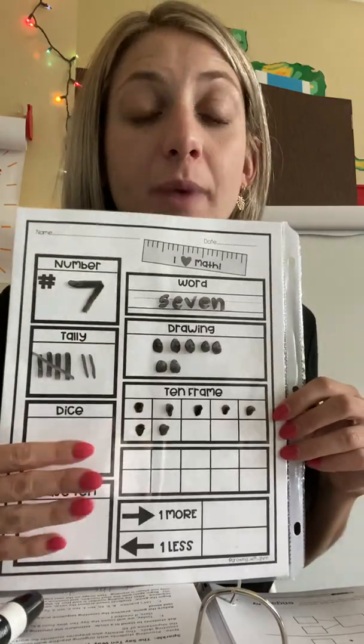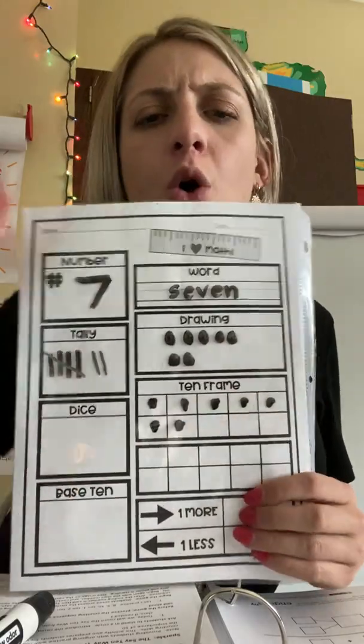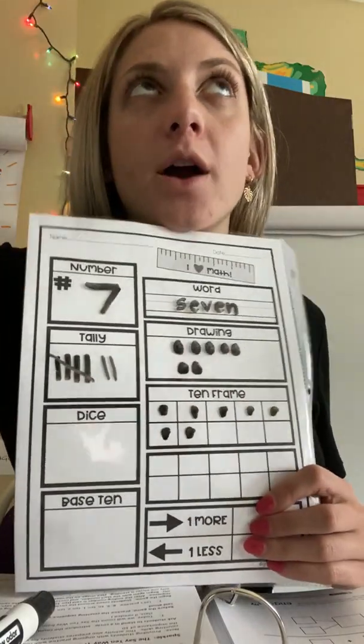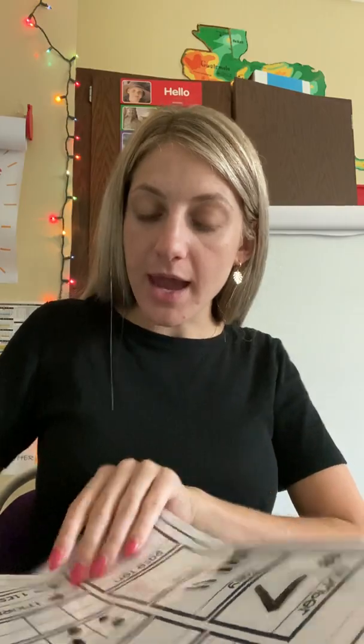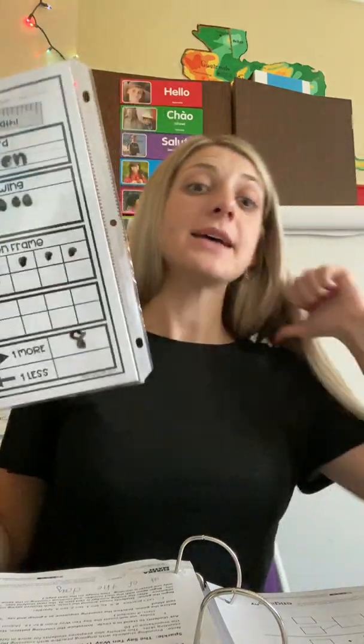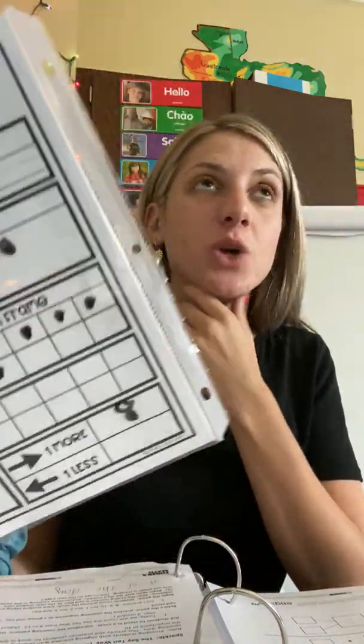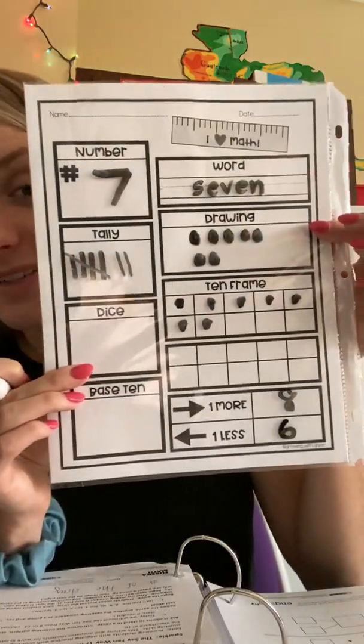Today we're going to skip these two boxes over here, but we are going to fill out one more, one less. So if our number is seven, what is one more than seven? Seven, eight. Yes. You have to count on one more. Eight is one more than seven. What is one less than seven? So we have to count back. So seven, six. One less than seven is six. Okay. So there is our number of the day all filled out. Good job. You are rocking it.